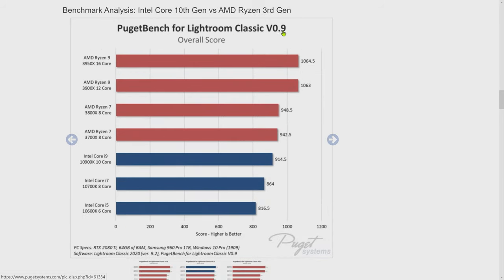For Lightroom benchmarks, the Ryzen 9 3950X is most powerful, the 3900X slightly less so, and the 3900XT I'm recommending sits between those two — a lot more powerful than Intel. So Lightroom favors AMD; Photoshop favors Intel. I wouldn't spend too much time worrying about it — you win in some areas and lose in others, and it's all about price to performance. Intel's price is just too high right now, so my main recommendation is AMD. For competitive gaming specifically, look at the Intel Core i9-10900K.